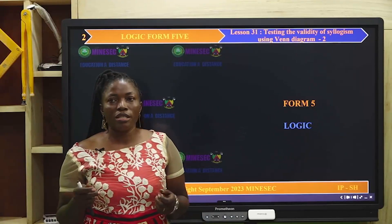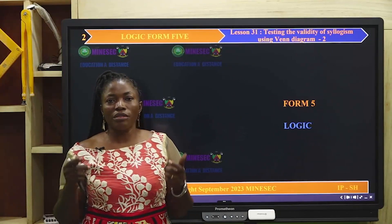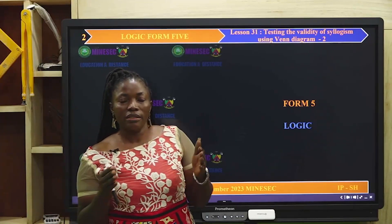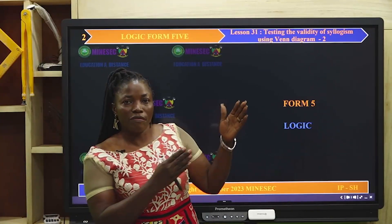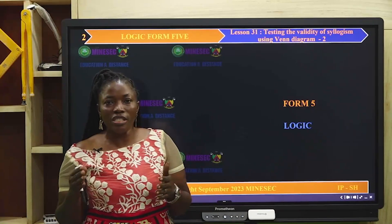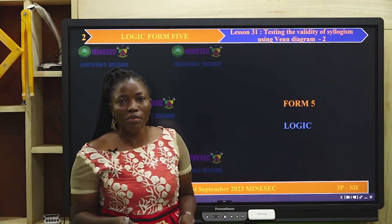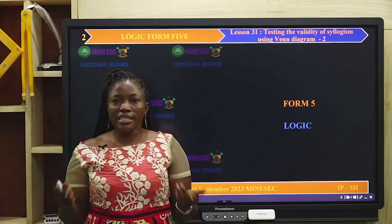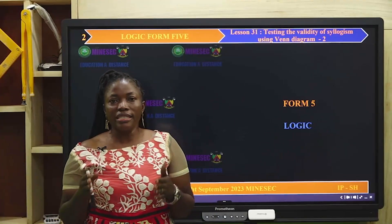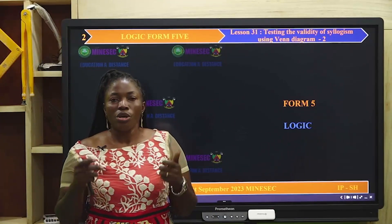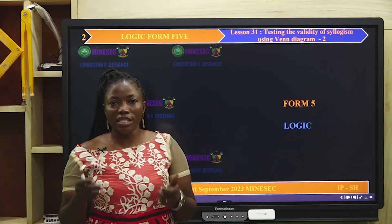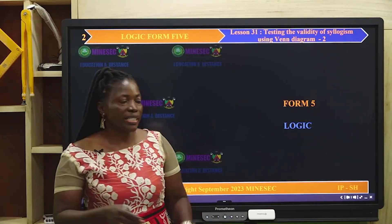During the first part, we saw how to test the validity of syllogisms using the Venn diagram technique in the case of valid arguments. This time around, we are going to test the validity of arguments using the Venn diagram technique in the case of invalidity.